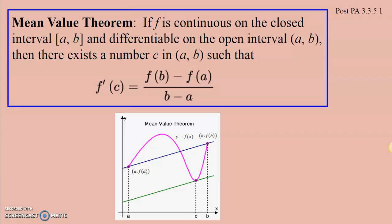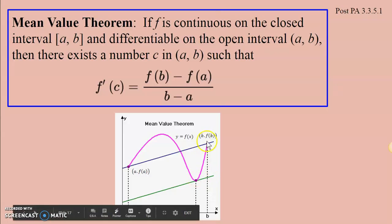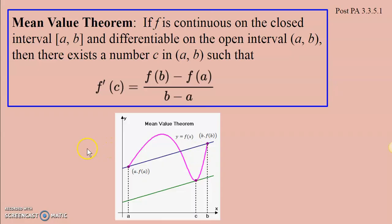There exists a c somewhere between a and b, such that f prime of c, the slope of the tangent line at c, is equivalent to the slope of the secant line between a and b. And that's the difference between the two theorems.